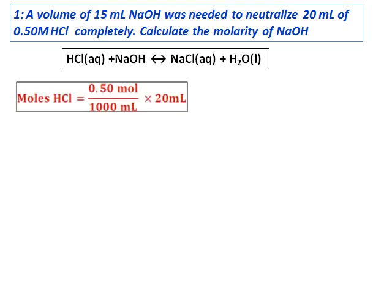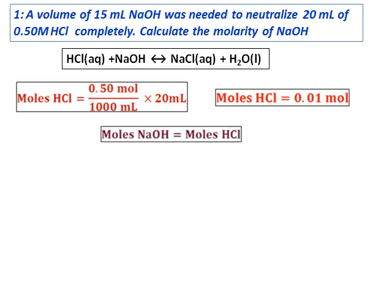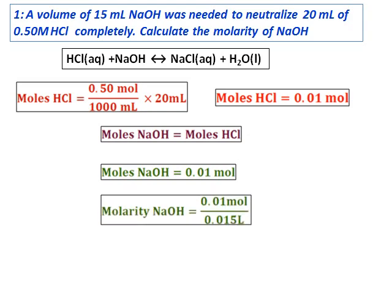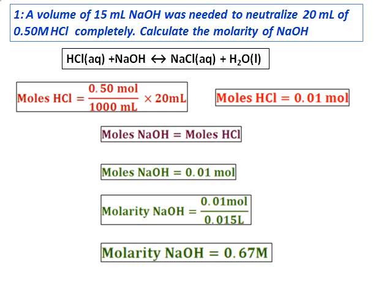We start by calculating the moles of HCl and I get the moles of HCl as 0.01 moles. From the equation, 1 mole of HCl reacts with 1 mole of NaOH. Therefore, moles of NaOH equals moles of HCl, which is 0.01 moles. From the moles, I calculate the molarity as moles divided by volume. Using 15 milliliters converted to 0.015 liters, I get the molarity of sodium hydroxide as 0.67 molar.